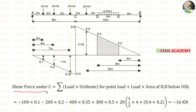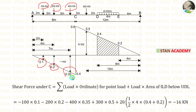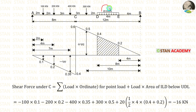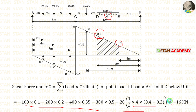Now let us calculate the shear force under point C. For point loads, multiply the load with the ordinate; for the UDL, multiply the load with the area. These ordinates should be taken as negative because they are in the negative shear force diagram. So: −100×0.1 − 200×0.2 − 400×0.35 + 300×0.5, then for the UDL: 20 × area, where area = ½ × b × (H1 + H2), with breadth = 4 m, H1 = 0.4, H2 = 0.2. After adding all values, we are getting −16 kN.